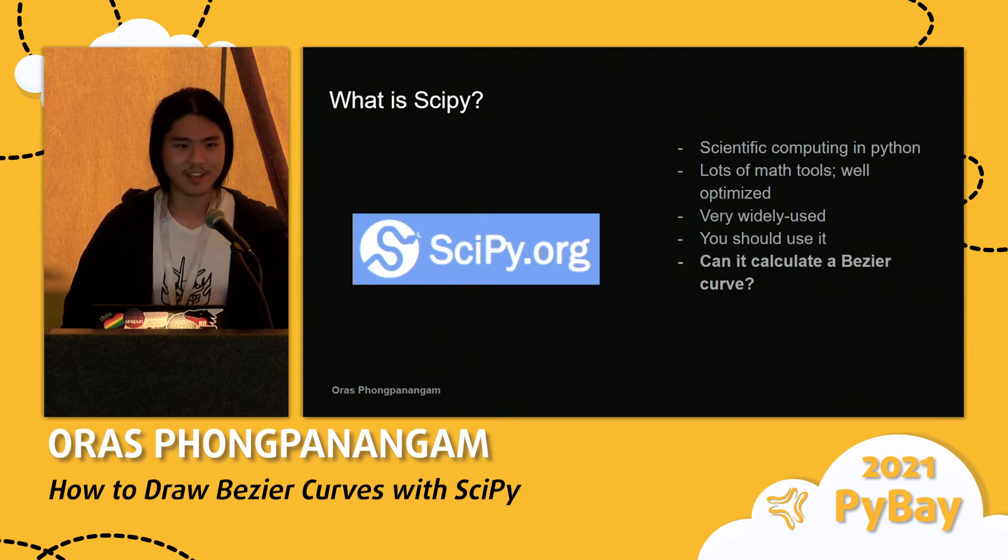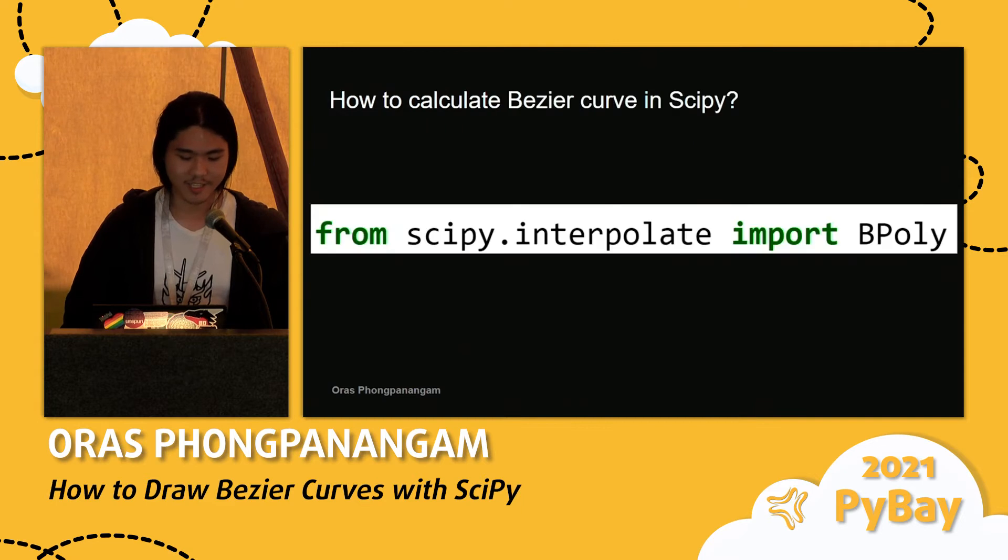And it does have a utility to calculate that, and it's called SciPy interpolate Bpoly. So if there's anything, any takeaway, it's basically that Bpoly is what you would use to draw a Bezier curve.